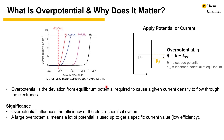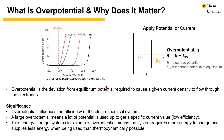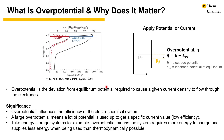A large overpotential means we use up a lot of potential to get a specific current value. In an energy storage system, overpotential means the system requires more energy to charge and supplies less energy than thermodynamically possible. Take this lithium-rich layered oxide, for example. When the potential is lower than 4.5V, the redox of transition metal has a small overpotential, and the energy difference between charge and discharge is small.